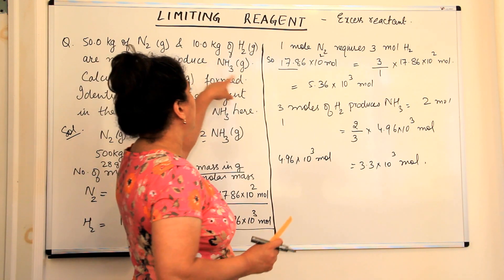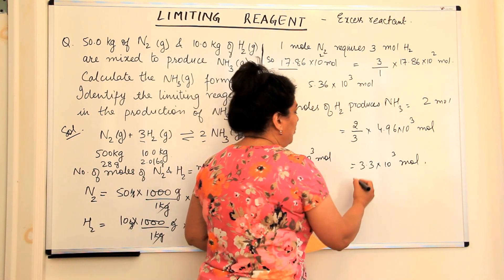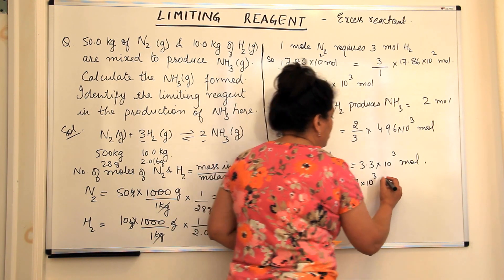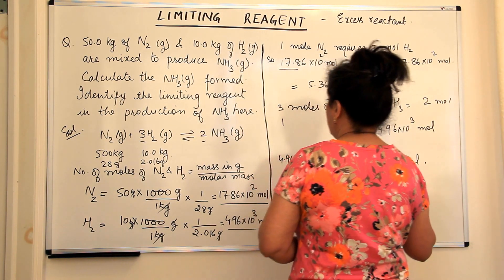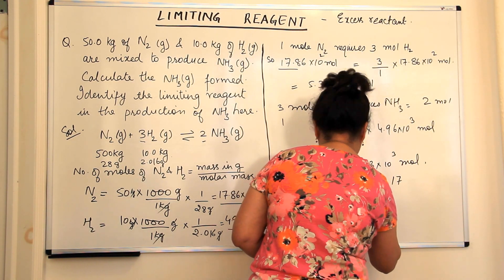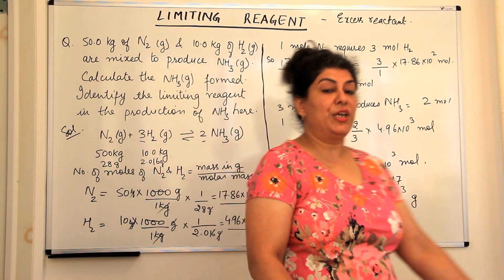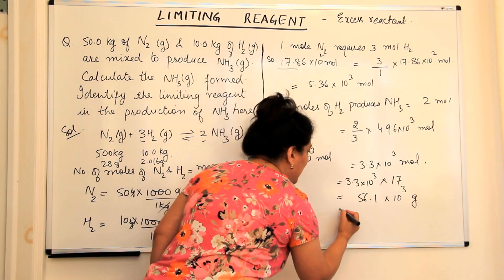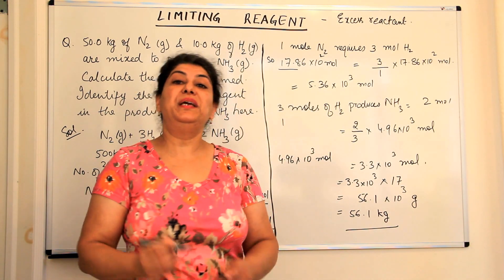What is the molar mass of ammonia? Nitrogen is 14 and hydrogen is 1, so 14 + 3 = approximately 17 grams/mol. Therefore, to convert moles to grams: 3.3 × 10³ moles × 17 g/mol = 56.1 × 10³ grams of ammonia. Since our question was given in kilograms, and 1,000 grams = 1 kg, this gives us 56.1 kilograms of ammonia produced.